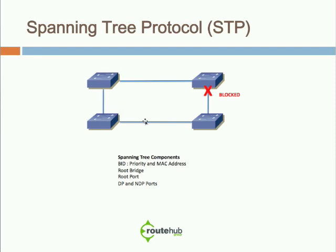On all individual segments, spanning tree determines which end is the designated port (DP) and which is the non-designated port (NDP). By default, if this is the root bridge, both ports on root bridge segments will be DP ports, and the other ports will likely be root ports. So first it determines the root bridge, then the applicable DP and NDP ports. We have a separate video covering this in more detail in our LAN switching training section.